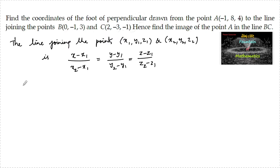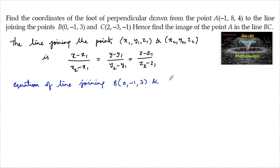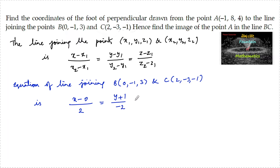So here, the equation of the line joining the points B(0, -1, 3) and C(2, -3, -1) is: (x - 0)/2 = (y + 1)/(−3 + 1) = (z - 3)/(−1 − 3), which simplifies to x/2 = (y + 1)/(−2) = (z − 3)/(−4).